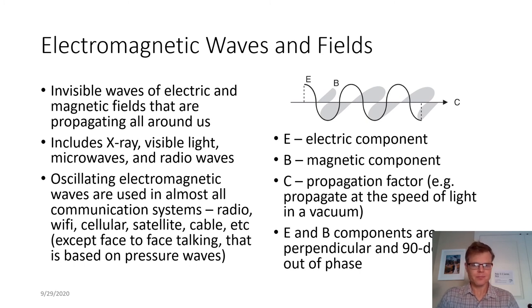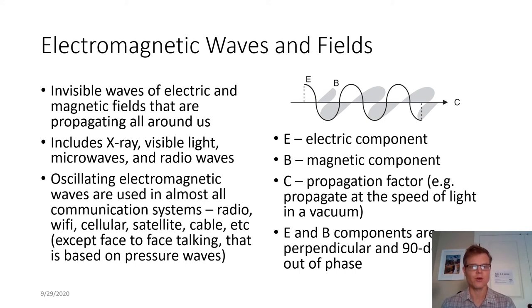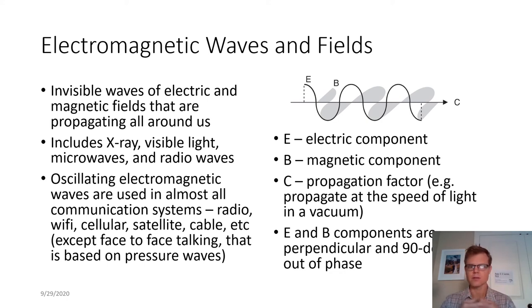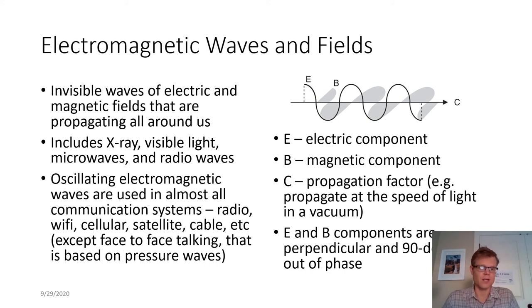The first thing we need to understand is the concept of electromagnetic waves and fields. These are invisible waves of electric and magnetic fields that are propagating — that's the wave part — all around us at all times. These include X-ray, visible light, microwaves, radio waves — many sources of this electromagnetic radiation, as it's often called — used in all communication systems: radio, Wi-Fi, etc.